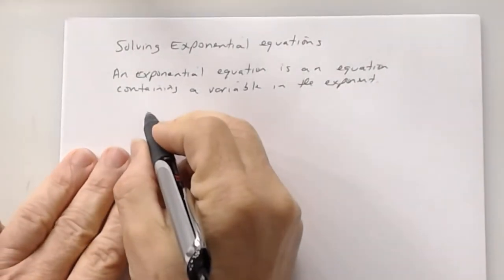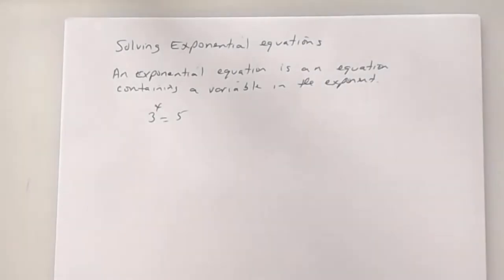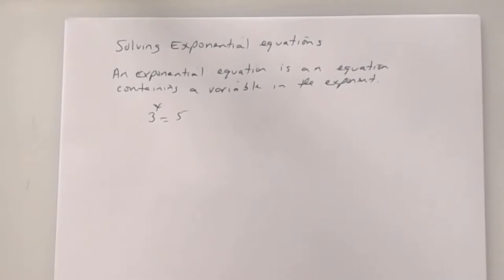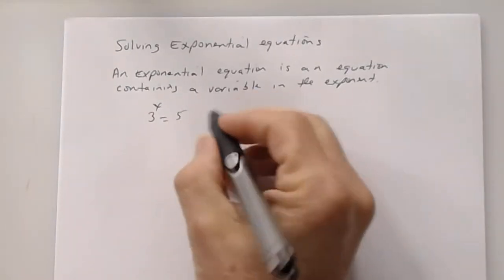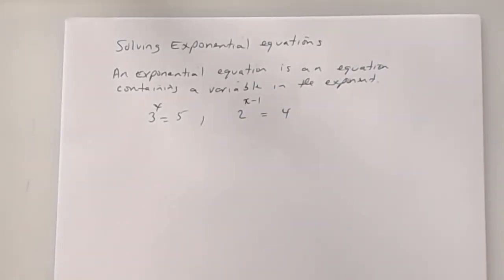Here are some examples. 3 to the x equals 5 — that's an exponential equation, because where's the variable? It's in the exponent: 3 to the x. Here's another one: 2 to the x minus 1 equals 4. That one is actually easier to solve than the first one. You're going to see why in a little while. So those are exponential equations.